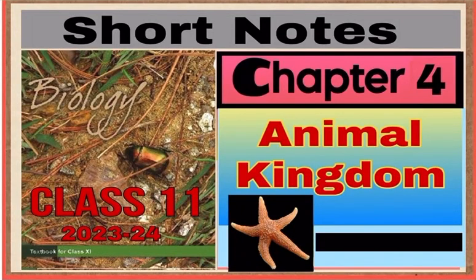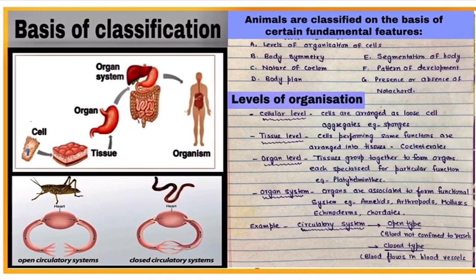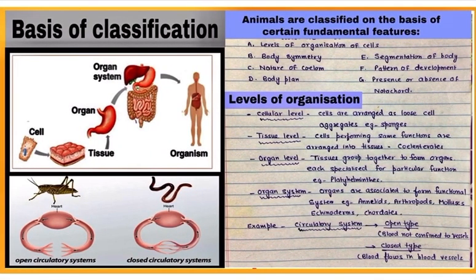Hello students, these are handwritten short notes of chapter number four: Animal Kingdom. Animals are classified on the basis of certain fundamental features: levels of organization,